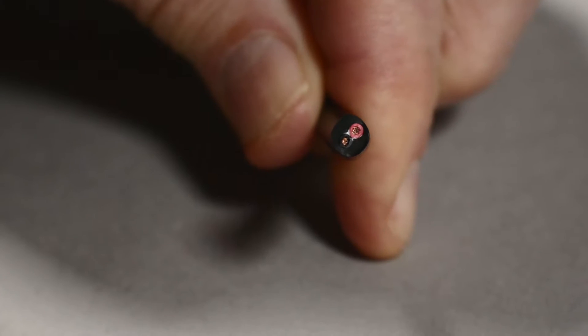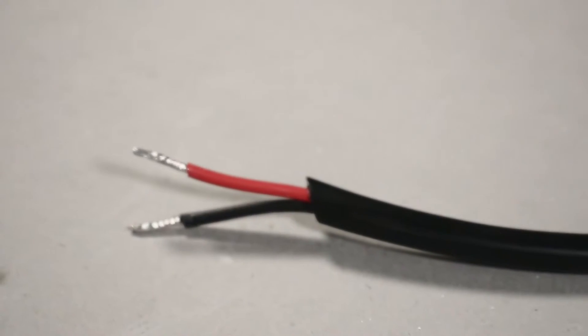Welcome! This video will show you how to successfully strip and tin a UL2464 round wire.